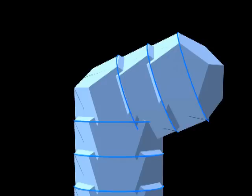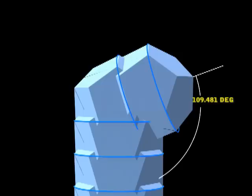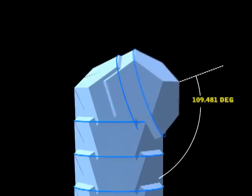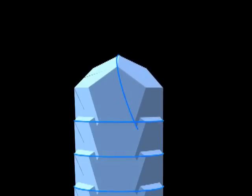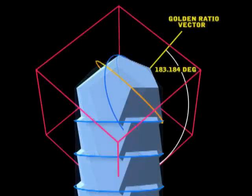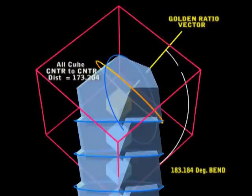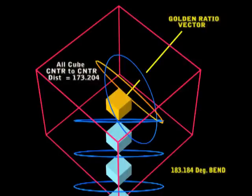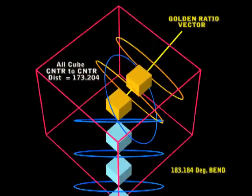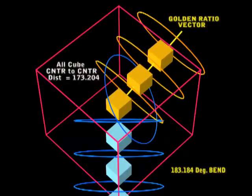But now I'm going to show you a new bend that I've discovered, and it runs along a different vector. The last one was a diagonal vector, but this is a completely new vector, and I'm calling it the golden ratio vector. I've put a gold block in the center, and now if I copy them gold blocks, space them apart 173.204 along that new vector.